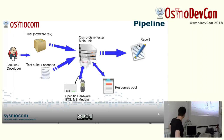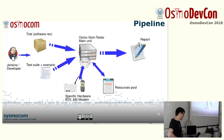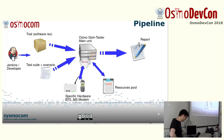Moving to the architecture — how it usually looks when you are using OsmoGSM Tester. It all starts with Jenkins or some developer running OsmoGSM Tester to run some tests. Most of the work happens in what we call the OsmoGSM Tester main unit, which is just a machine running OsmoGSM Tester — written in Python, by the way — and it outputs a report as JUnit XML.